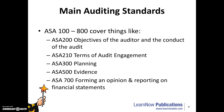The main auditing standards range from ASA 100 through to 800, and they cover things such as the objectives of the auditor, the terms of an engagement, planning, evidence, and forming an opinion.